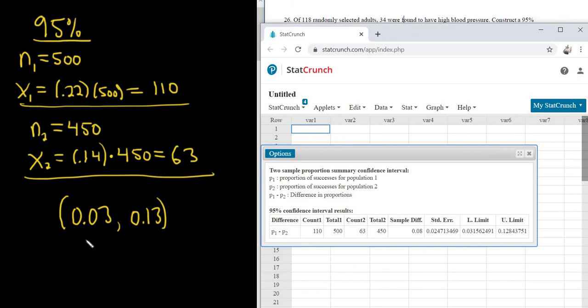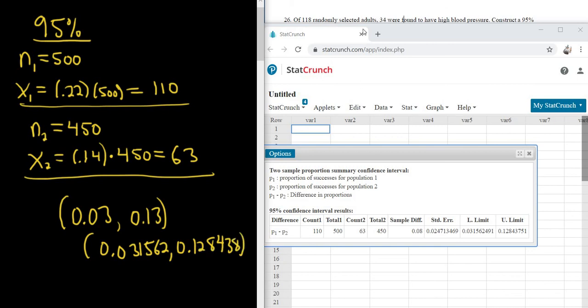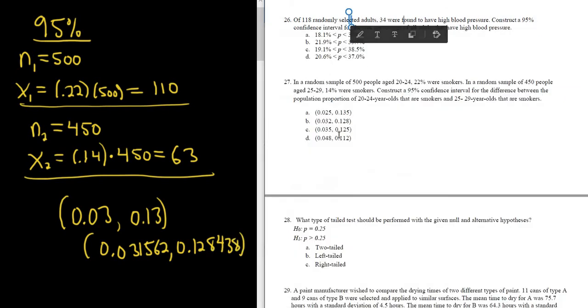Let me go back and use more decimals. So I'm going to use 0.031562 just to be safe. That's 0.128438. Just put a bunch down. Let me see if I can pick the right choice now. So the right choice here looks to be, so they have three decimals. So I think it's going to be this one here. I think it's going to be B.